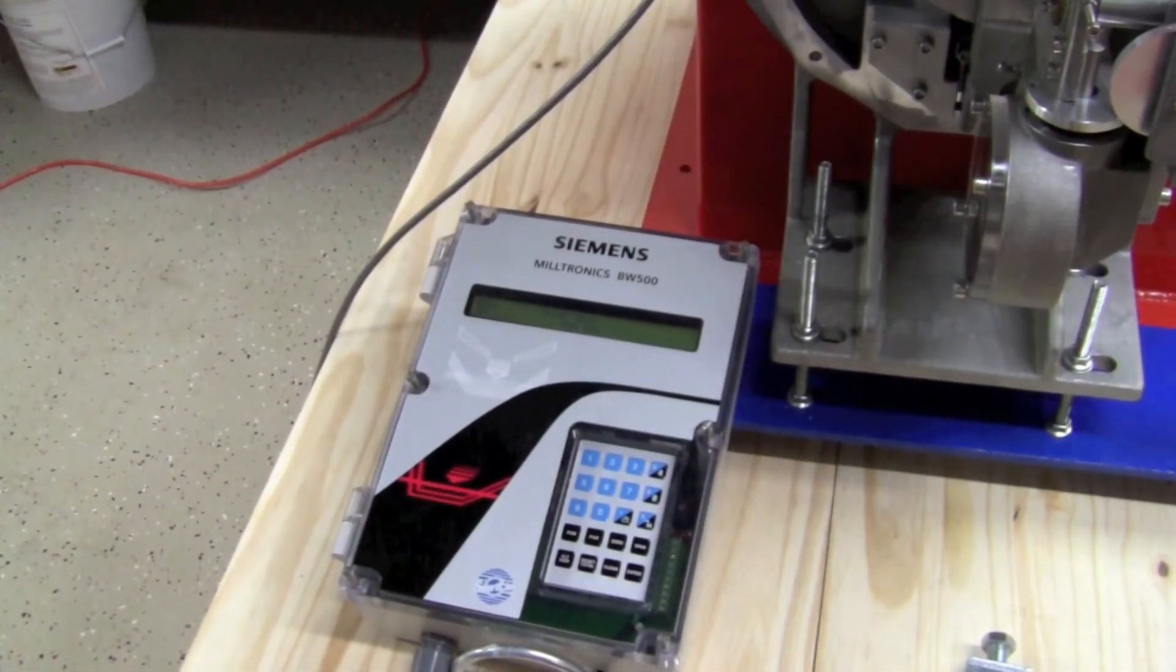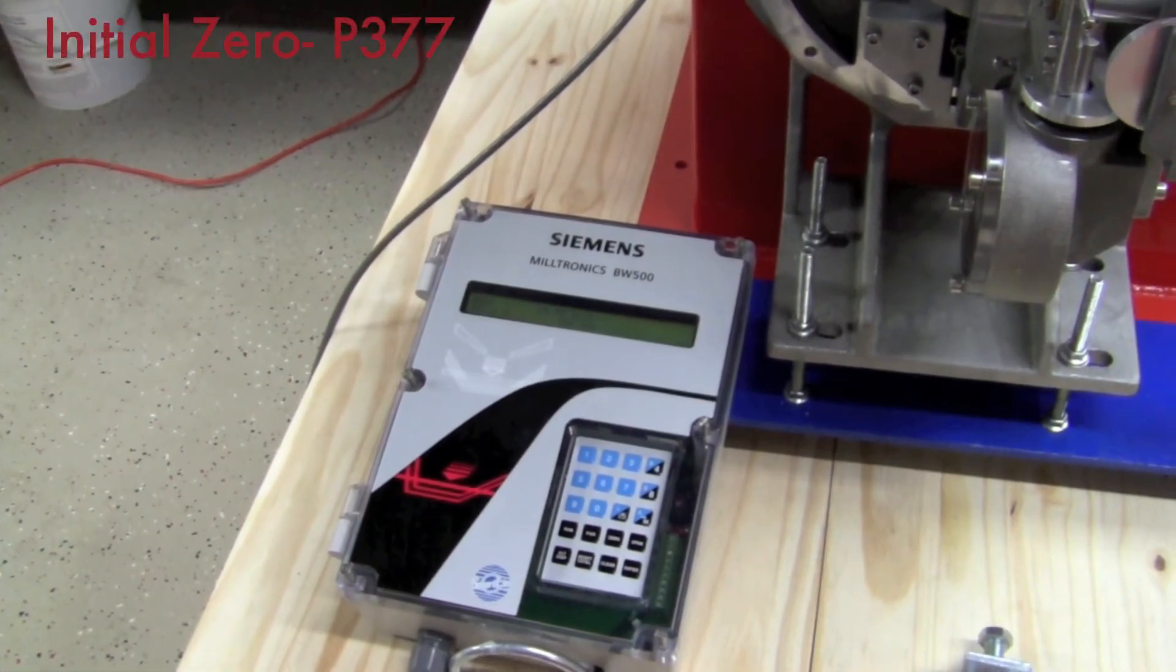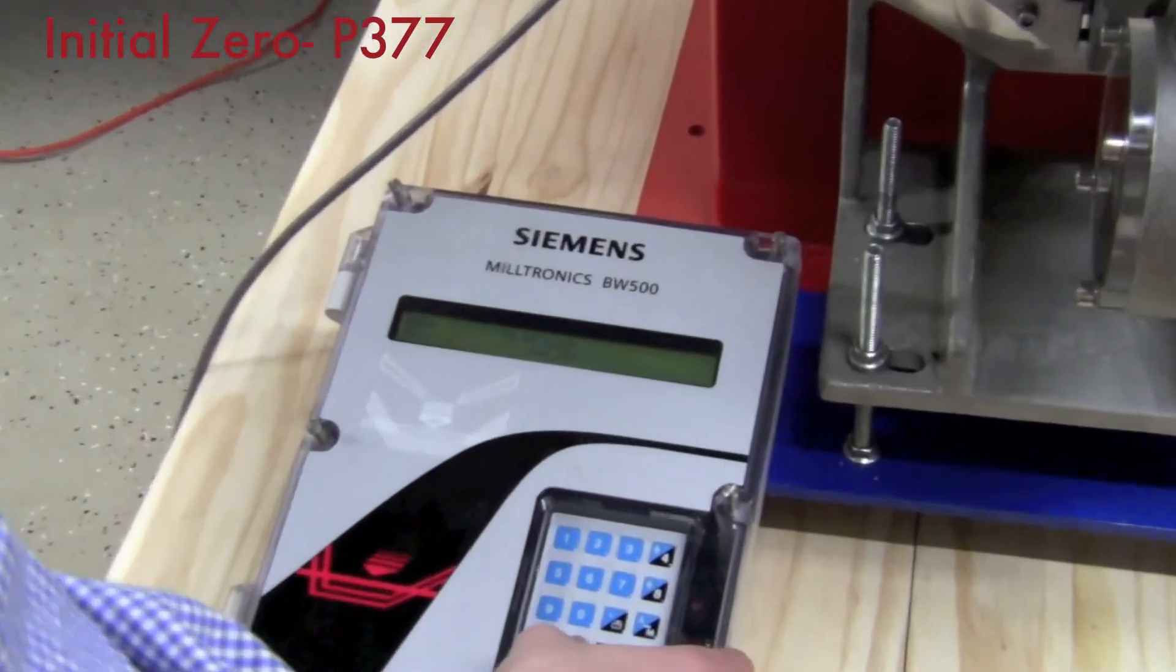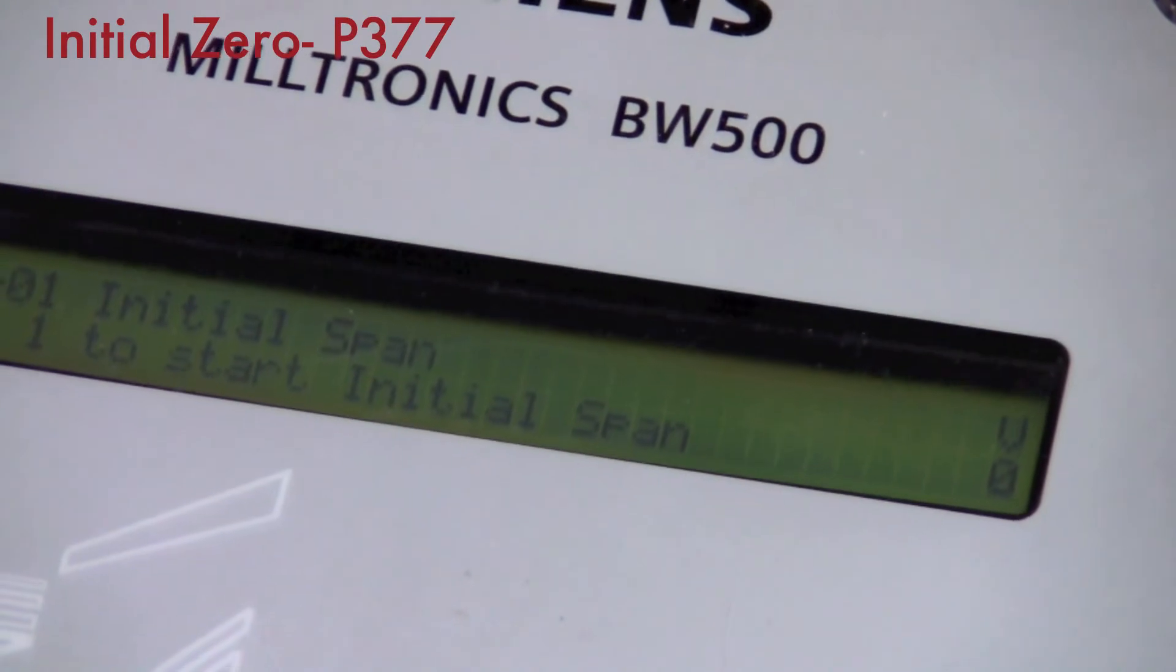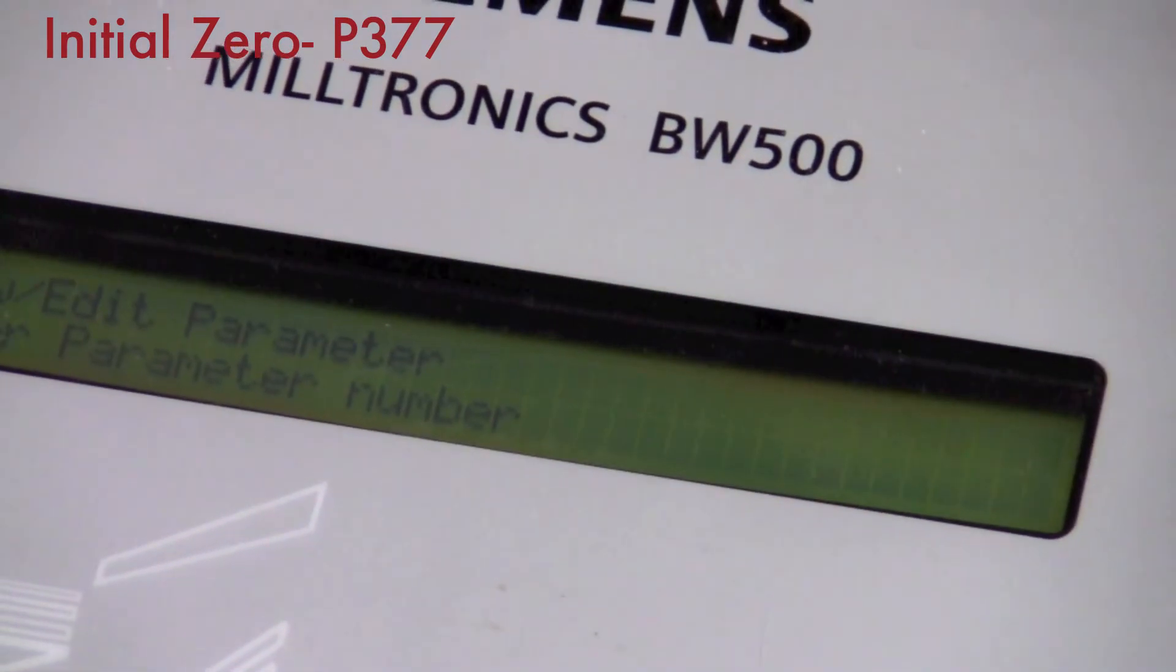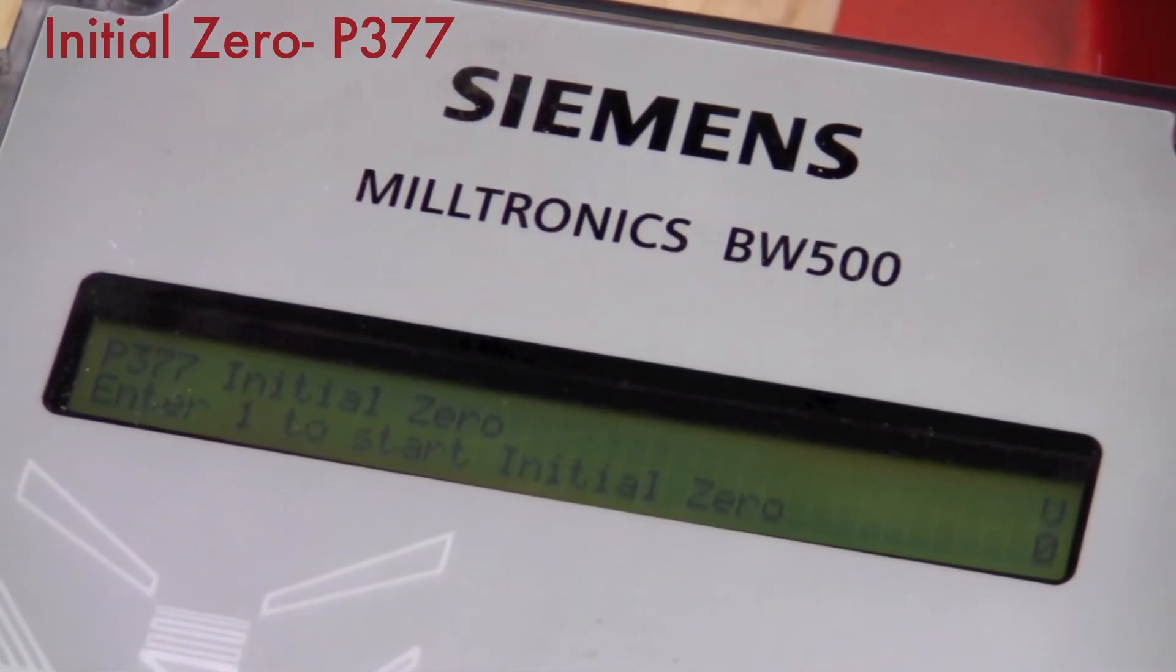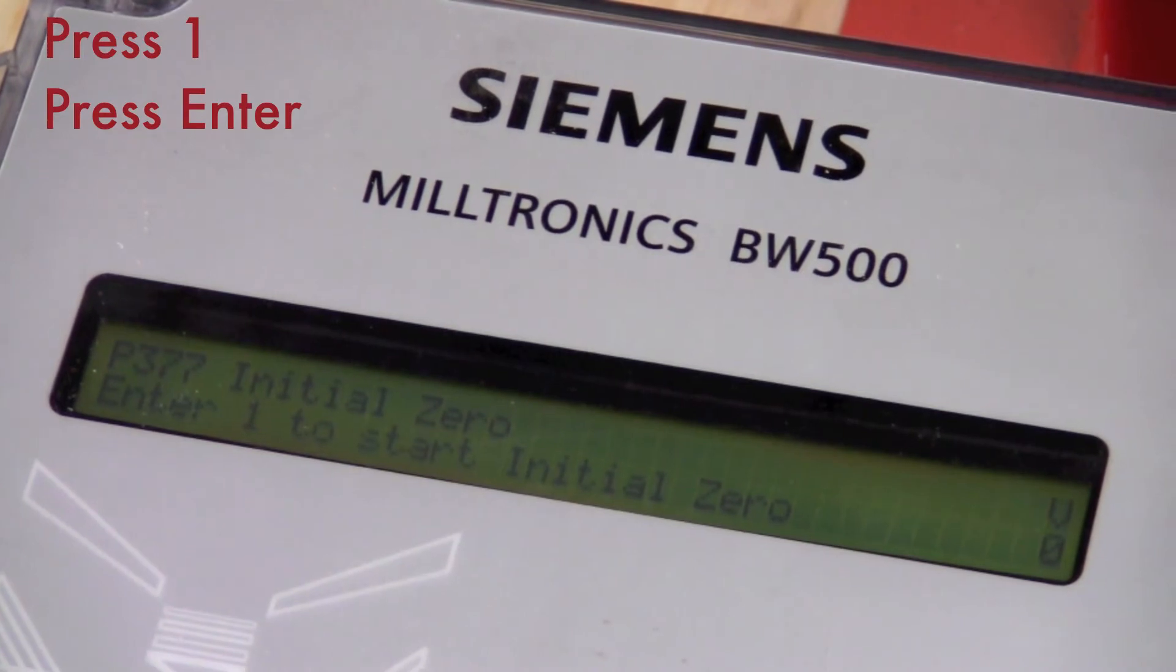Once you've calculated your test rate, you will then need to do an initial zero and an initial span. Initial zero is parameter 377. You need to make sure that the test weight is off of the sensing head and press one to start.